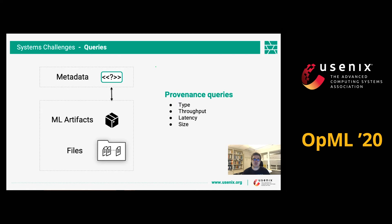System challenges involve the design of queries. We have a number of artifacts — models, training datasets, features — stored as files on disk, and we want to figure out what metadata we want to track. For this, we look at the provenance queries we are going to run later: SQL queries, time series queries, full-text search, or pure graph queries. All of these will influence the way we store and what we store in our metadata.